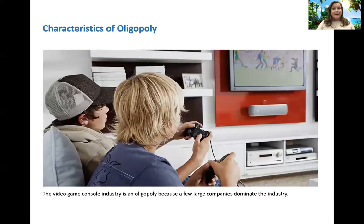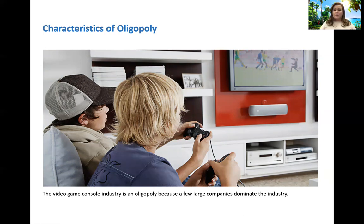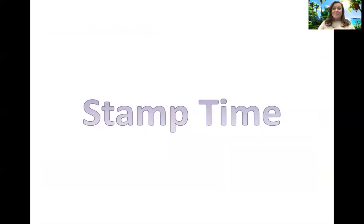Another example is gaming. Ask people: are you an Xbox or a PlayStation person? Every now and then you get somebody who says they have a Wii. They've come out with the Nintendo Switch and that's becoming a big one again. There are many gaming systems out there that aren't Xbox, PlayStation, or Nintendo, but the market is dominated by those three. And that is the end of 4.3 — hope you had fun learning about monopolistic competition and oligopolies. I'll see you for the next lesson.